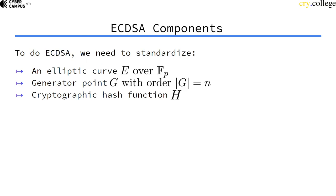In order to use ECDSA, we need three ingredients: an elliptic curve over a finite field, a generator with some large order, and a cryptographic hash function H.